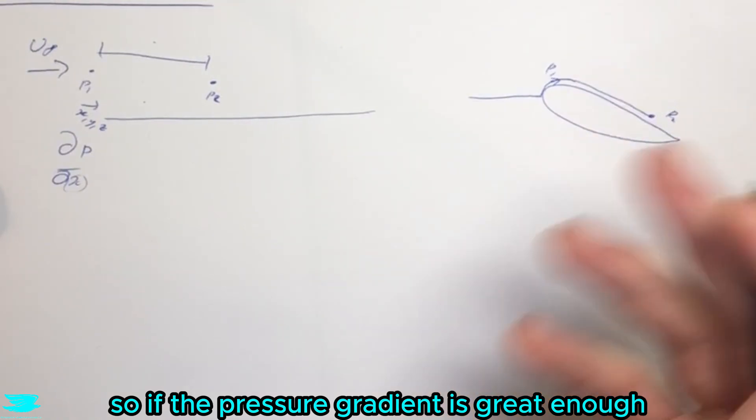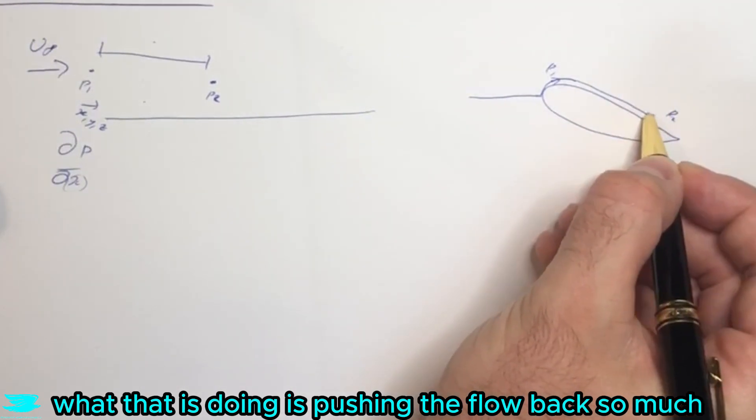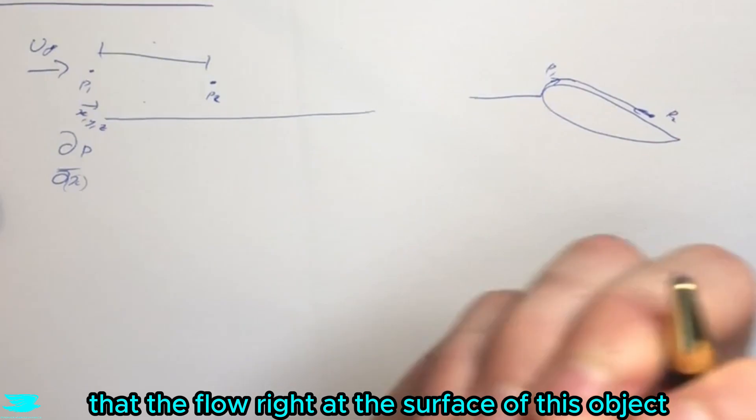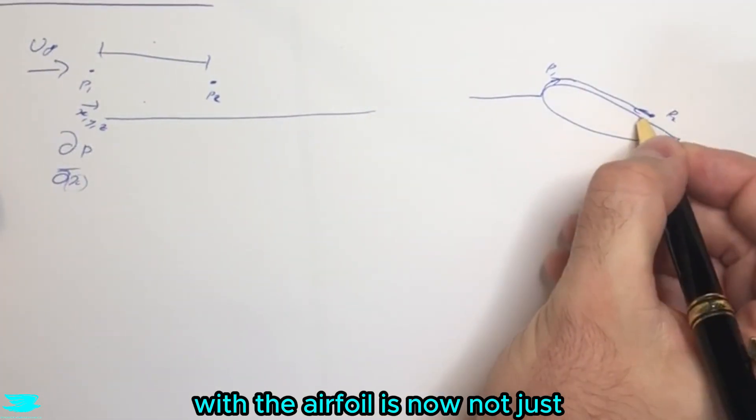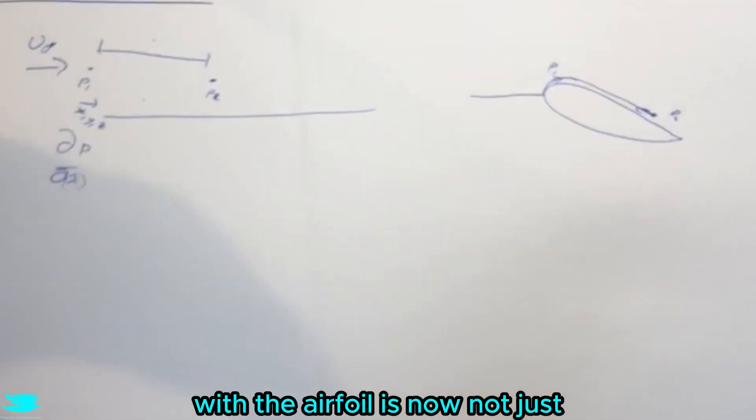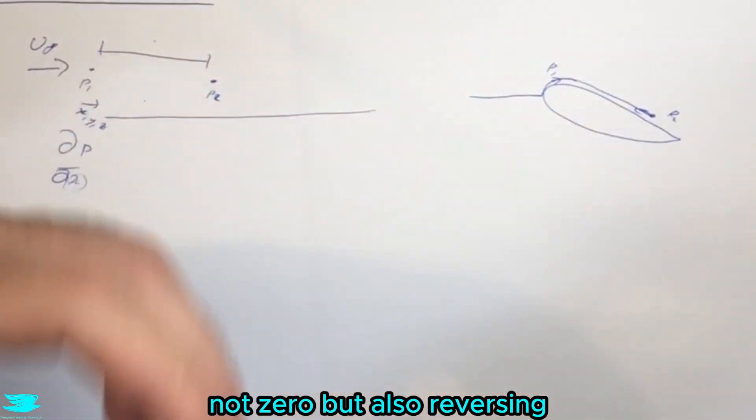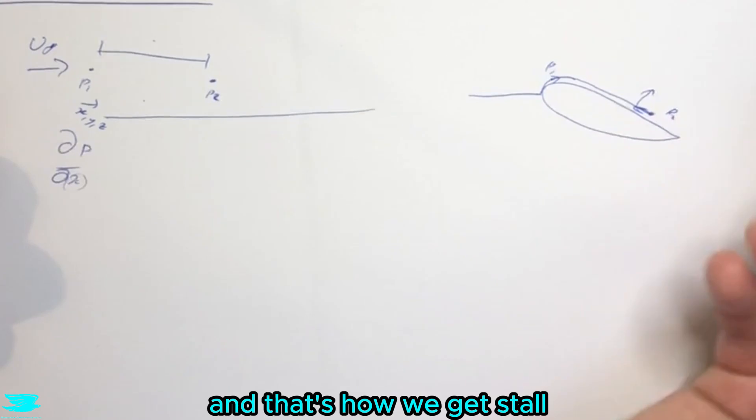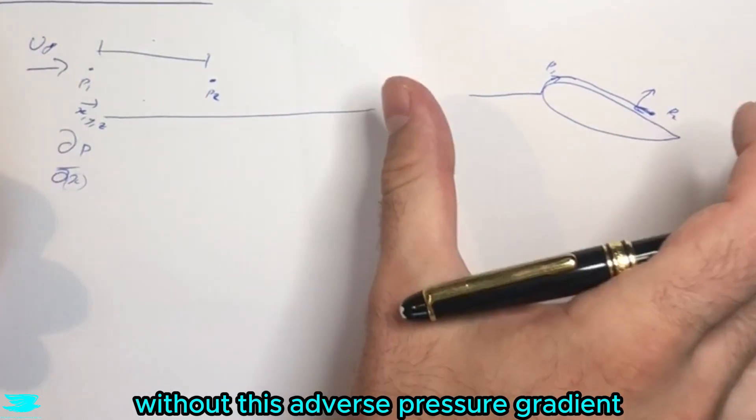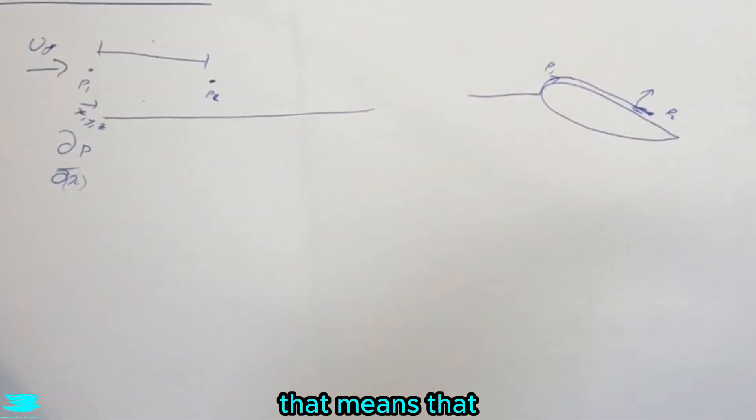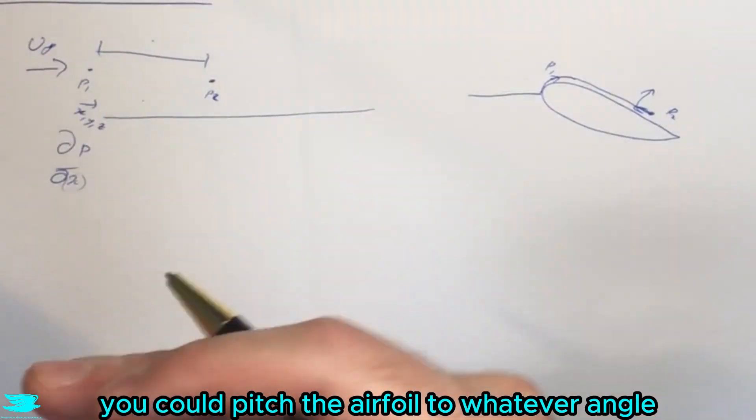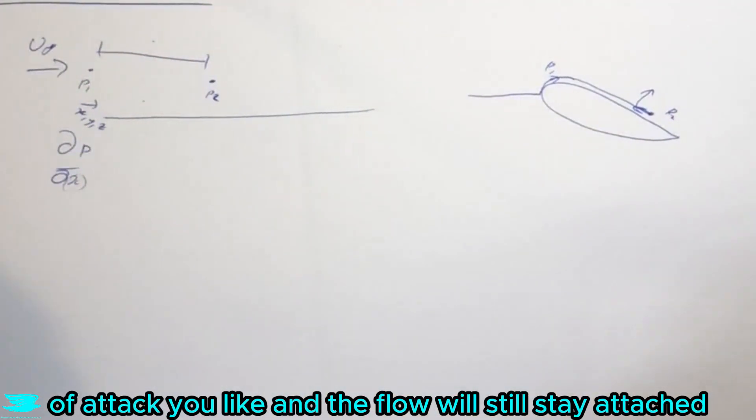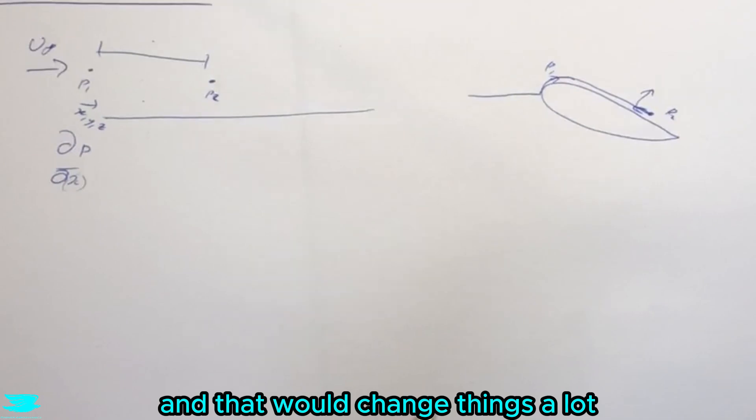If the pressure gradient is great enough, it's pushing the flow back so much that the flow right at the surface of the airfoil is now not just zero but also reversing - it's actually a negative velocity - and that causes it to lift off, and that's how we get stall. Without this adverse pressure gradient we wouldn't get stall, so if we didn't have the adverse pressure gradient you could pitch the airfoil to whatever angle of attack you like and the flow would still stay attached.